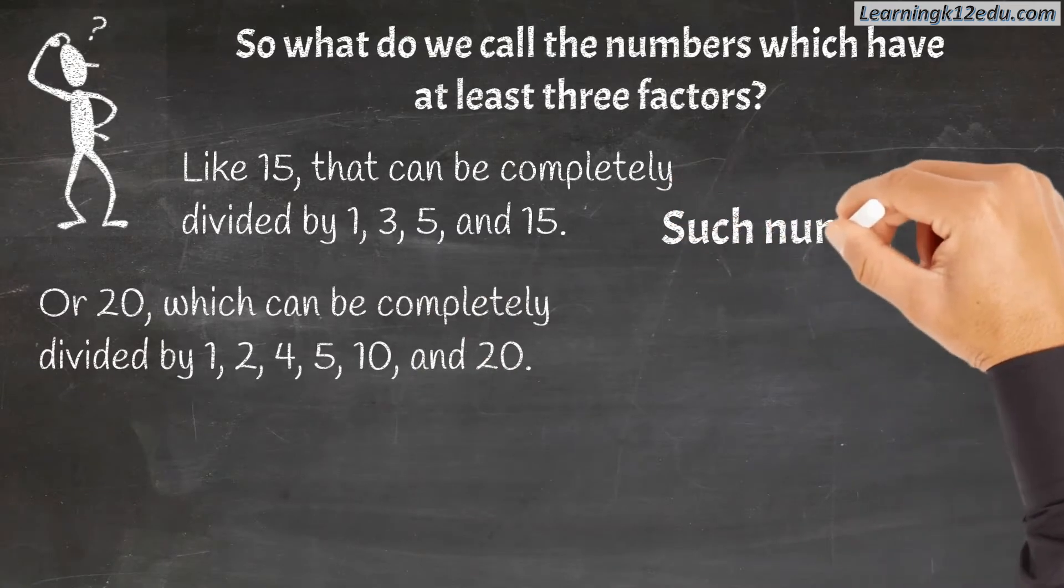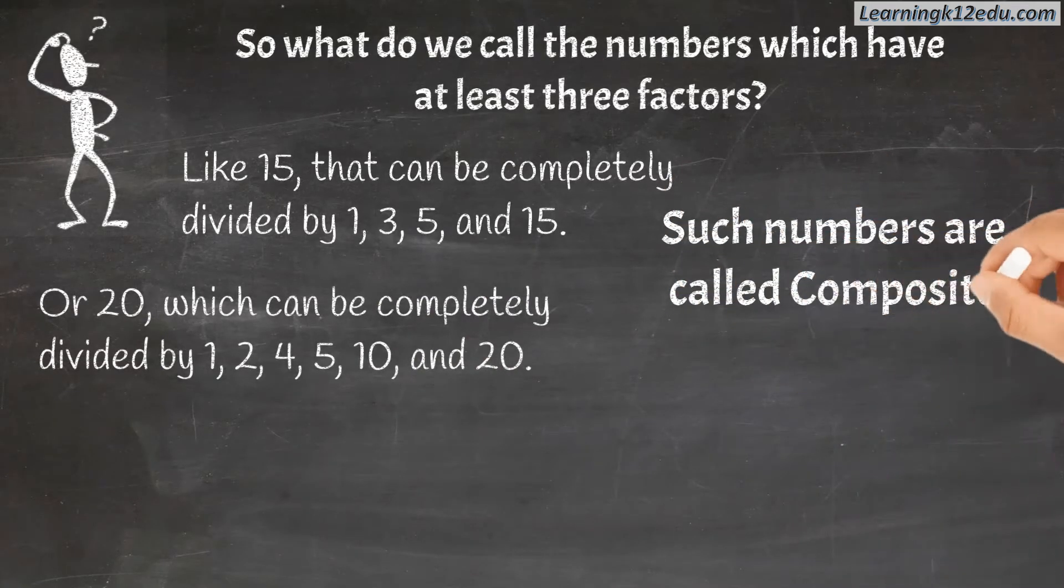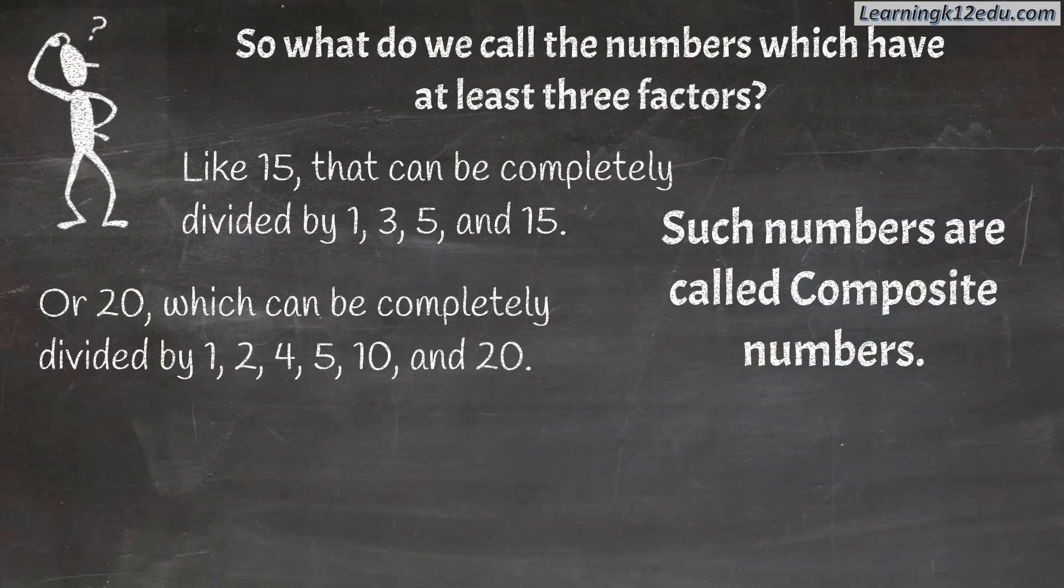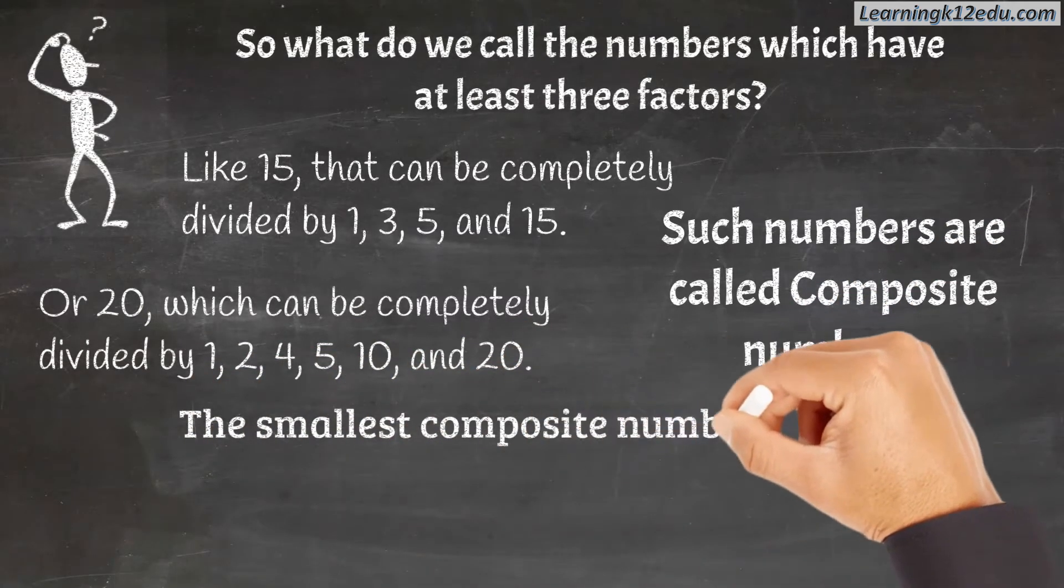Such numbers are called composite numbers. The smallest composite number is 4.